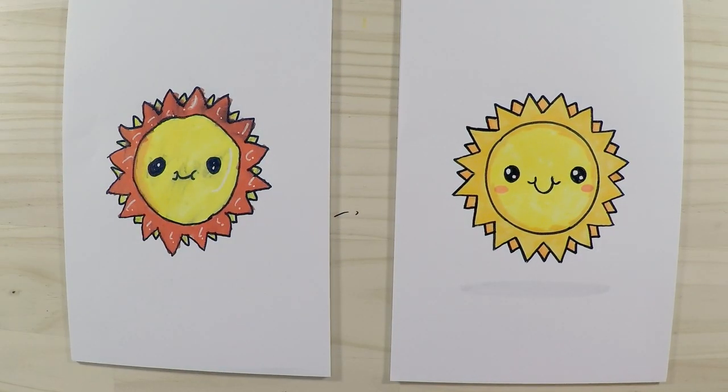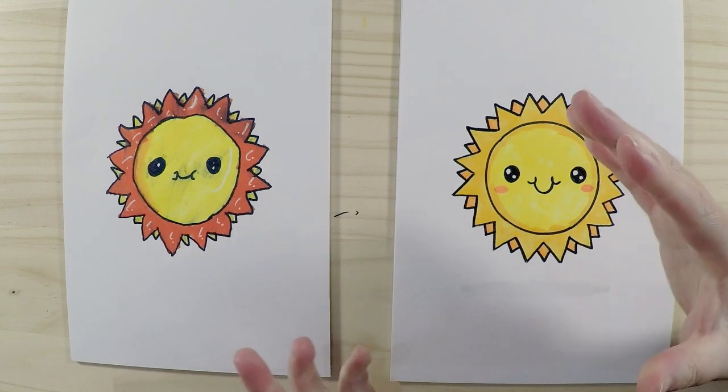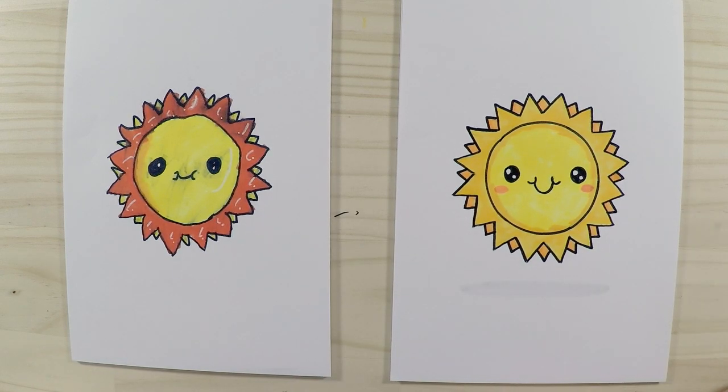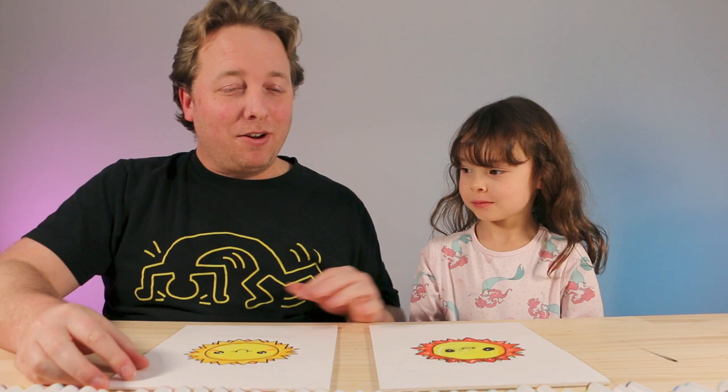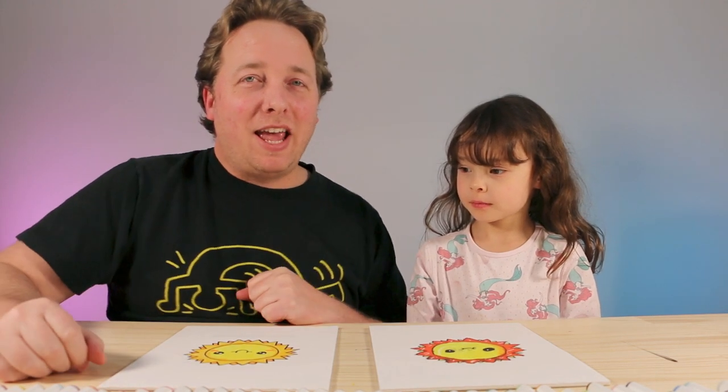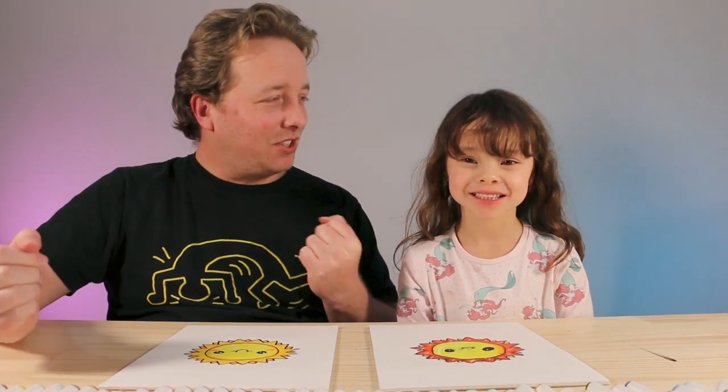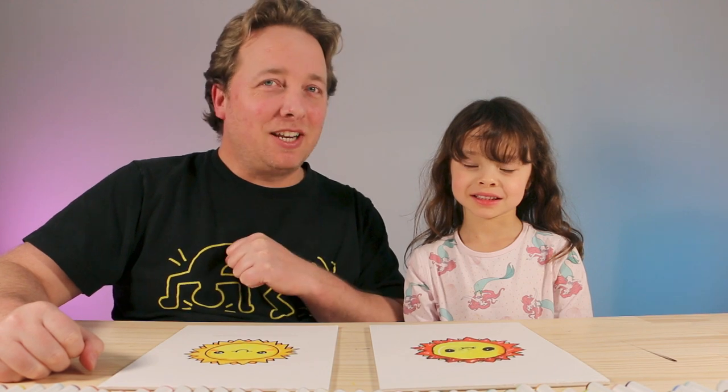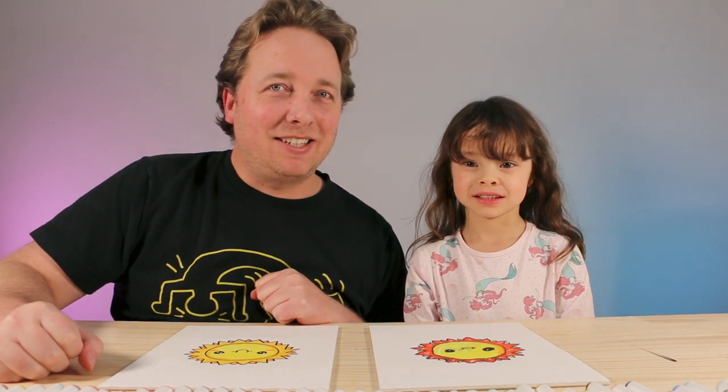And we're back! So we finished coloring them in, and they're nice and bright and yellow. I think you've done a wonderful job. Are you happy with yours? Yes, that's great! And here's an interesting fact: did you know that the sun is actually a star? That's right. So if someone asked you what's the closest star to Earth, you would say the sun. So I hope you followed along and had lots of fun drawing the sun. Thank you for watching our videos, and we'll see you again next time. Bye!